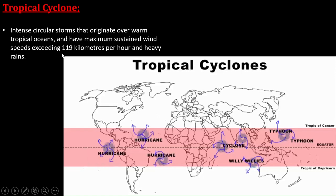Tropical cyclones have different names: they are called cyclones in the Indian Ocean, hurricanes in the Atlantic and Pacific Ocean, and typhoons mostly associated with the Pacific Ocean. In the next slide, we focus on why they move clockwise in the southern hemisphere and counterclockwise — or anti-clockwise — rotation in the northern hemisphere.